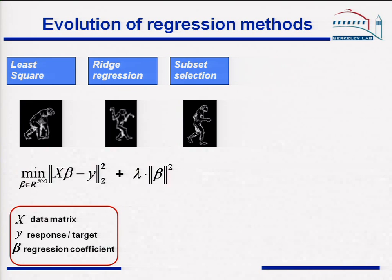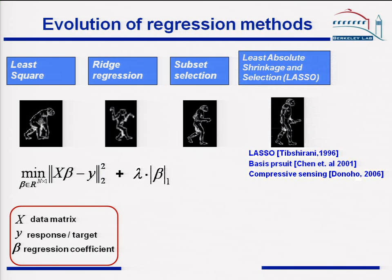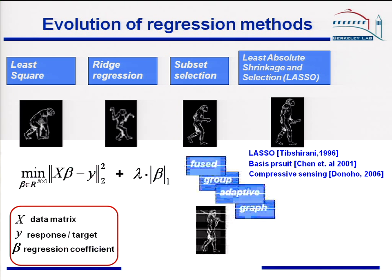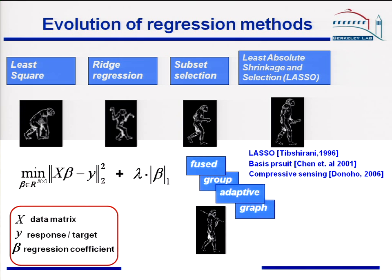Recently, the LASSO — absolute shrinkage and selection operator — enjoys the advantage of both ridge regression's numerical stability and subset selection's interpretable model. This sparked regression in several different fields such as statistics. There are also improvements like adaptive lasso. The idea of lasso is to replace L2-norm regularization with L1-norm optimization.